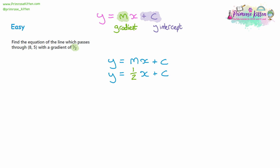To work out the plus c, we need to figure out y and x. We have the values eight and five — with coordinates, the first is the x-value and the second is the y-value. So we swap y for five and x for eight. Remember, when you've got two letters next to each other like M and x, they are being multiplied. So we simplify: a half times eight — eight halves make four whole ones. So five is equal to four plus c.